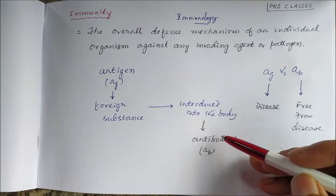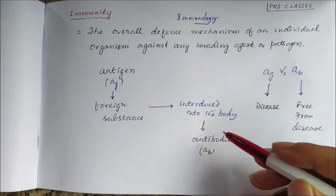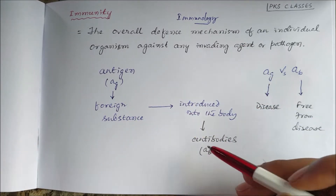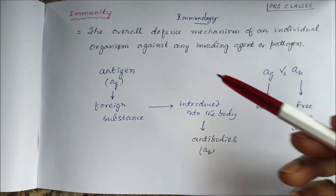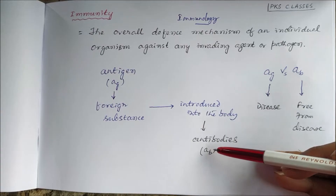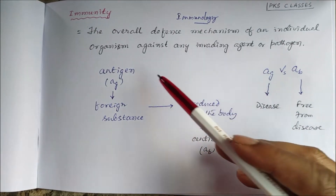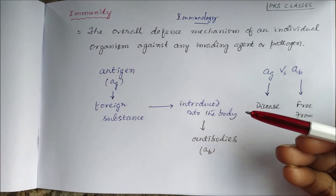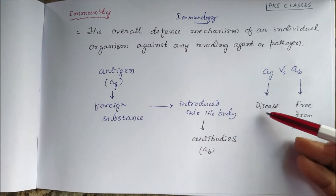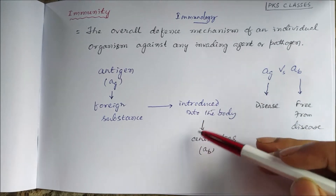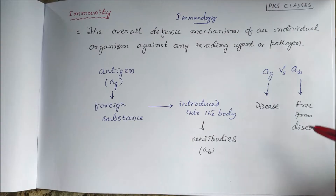Our immune system processes those antigens and produces antibodies specific to those antigens. Then there will be an antigen-antibody reaction, and if the antibody neutralizes the antigen, we will be free from the disease. Antigens can cause the disease, and antibodies, by eliminating the antigen, can make us free from the disease.